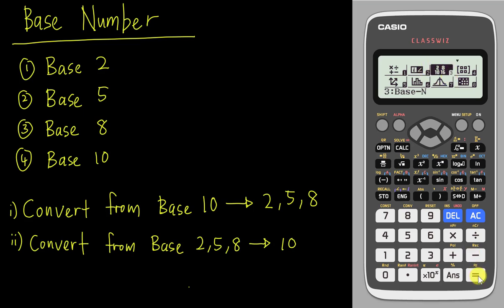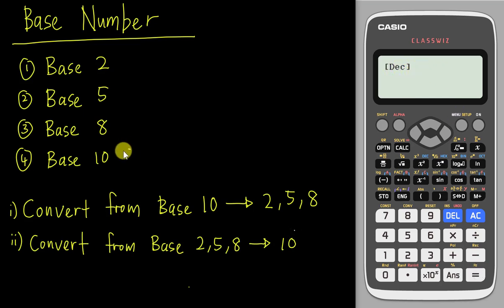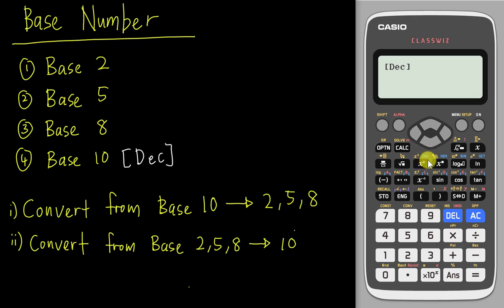Let's go into the base number mode. 'DEC' basically stands for base 10, so you need to know that base 10 in this calculator is DEC. You should be able to see the blue color letter 'DEC' here.